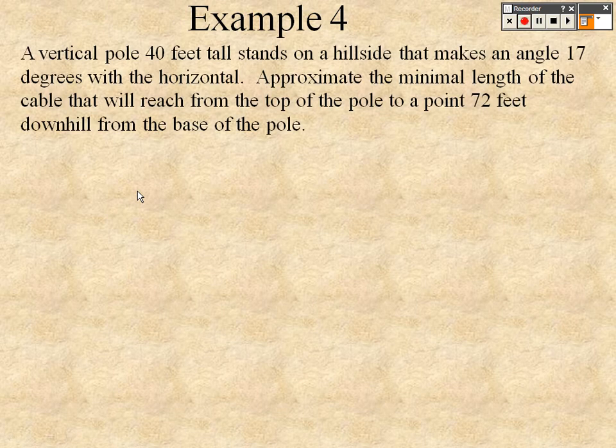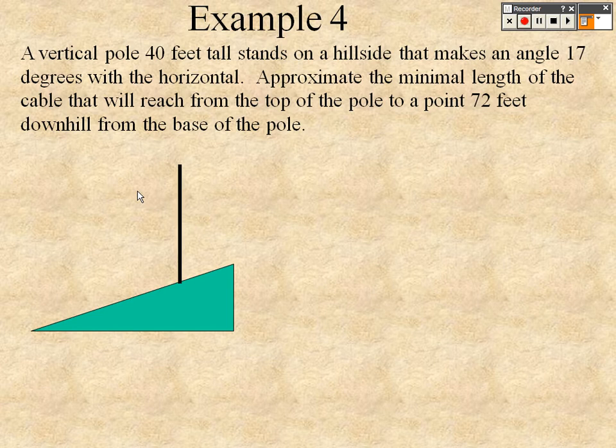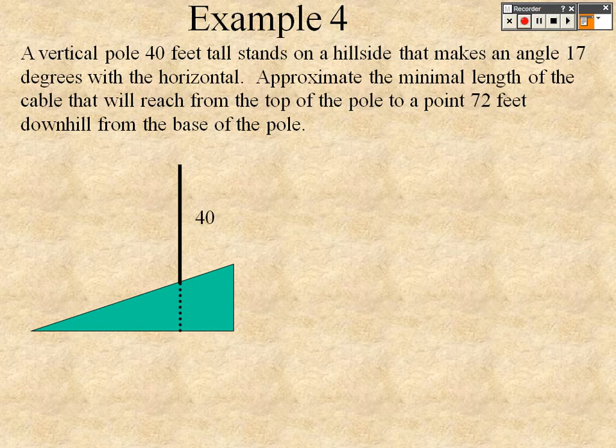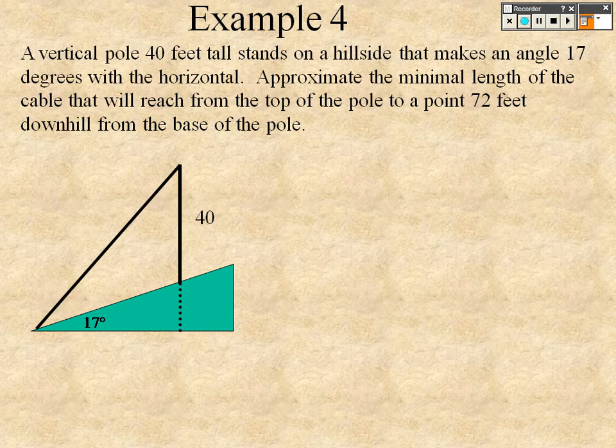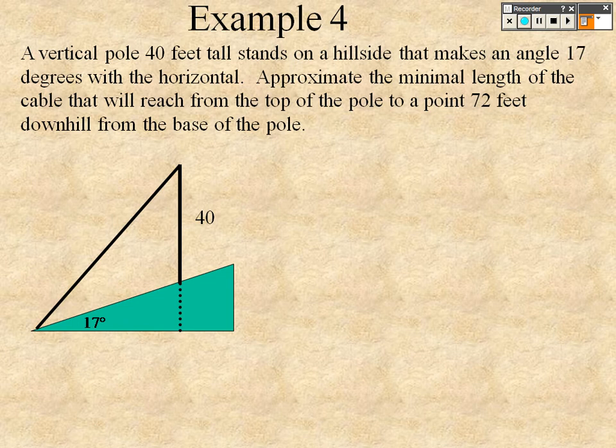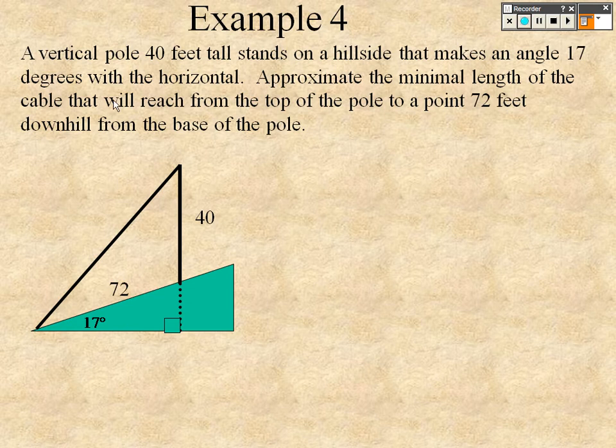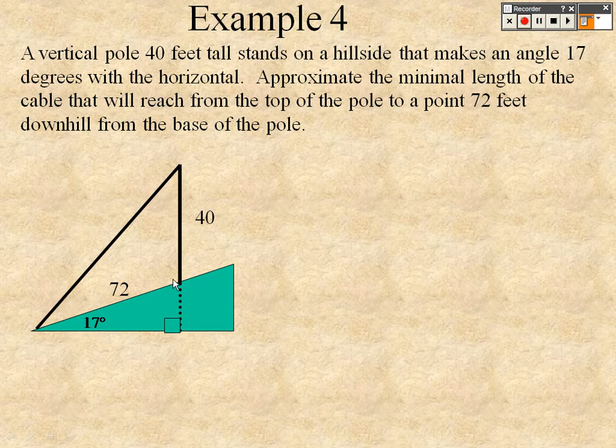A vertical pole 40 feet tall stands on a hillside at an angle of 17 degrees with the horizon. So there's the hillside and there's a 40 feet tall at an angle of 17 degrees. Approximate the minimum length of the cable that will reach from the top of the pole to a point 72 feet down from the bottom of the hill. So we have ourselves a right angle. We at least know that. We know that from here to here in the hill is 72. From here to here is 40.